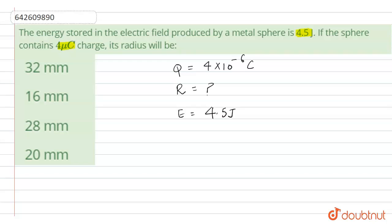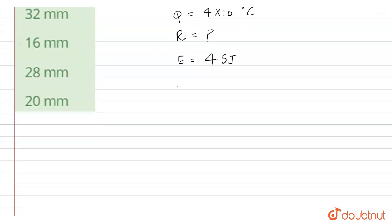Now use this formula: energy equals 3 upon 5 q squared divided by 4 pi epsilon 0 R. This is the formula for energy stored by a charged metal sphere.